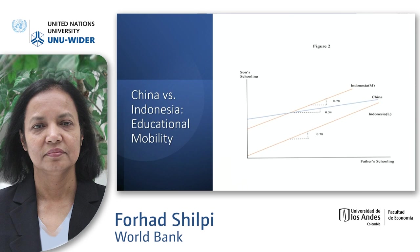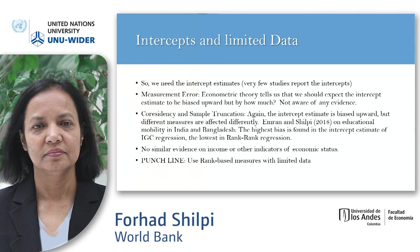The upshot of all this discussion is that you can't just look at relative persistence — you also need to look at absolute mobility. In other words, you also need to look at the intercept estimate. There is a lot less evidence on how the intercept estimate performs under different types of data constraints. But overall, it does look like the rank-rank regression performs much better.